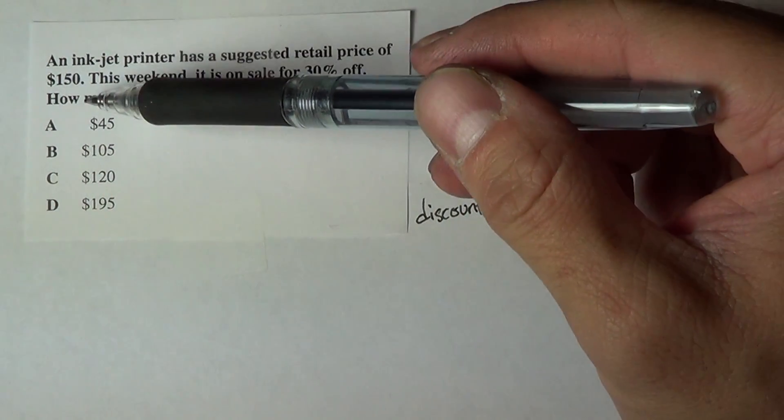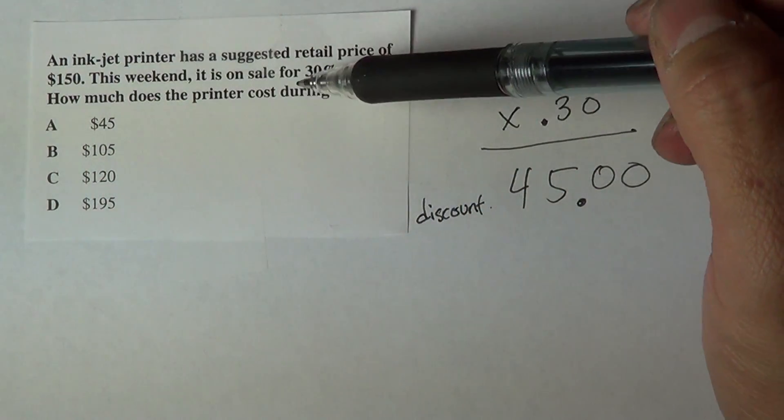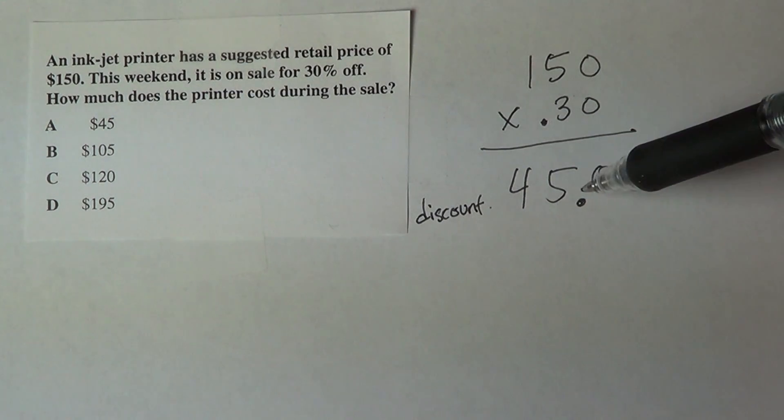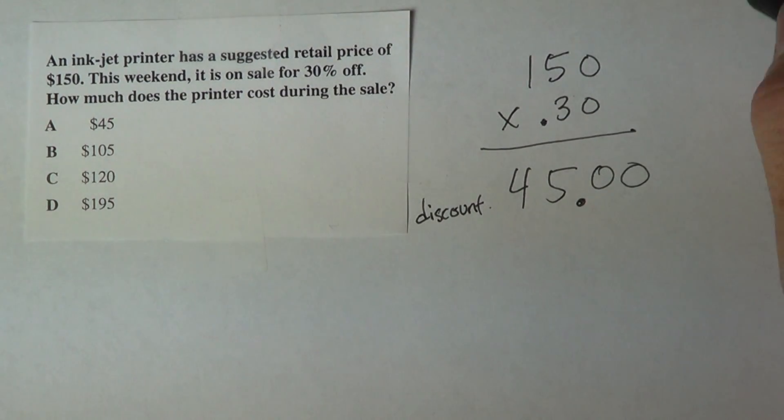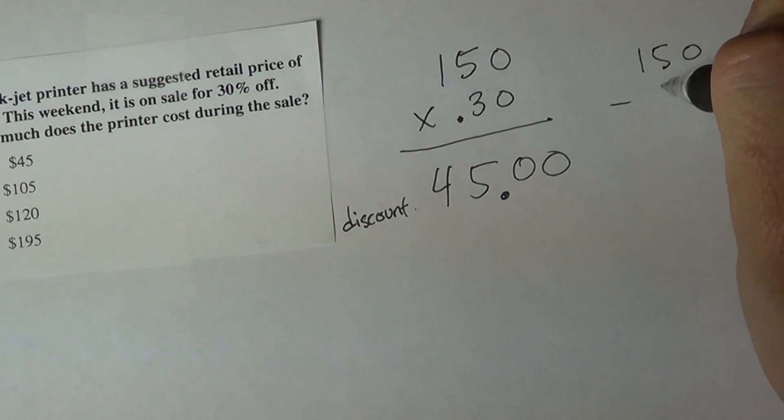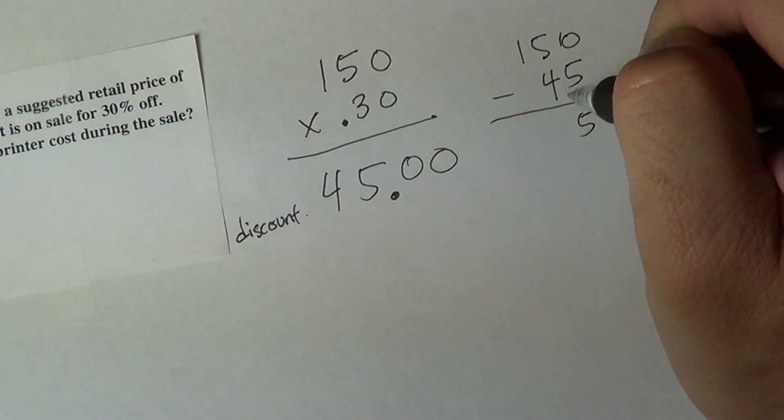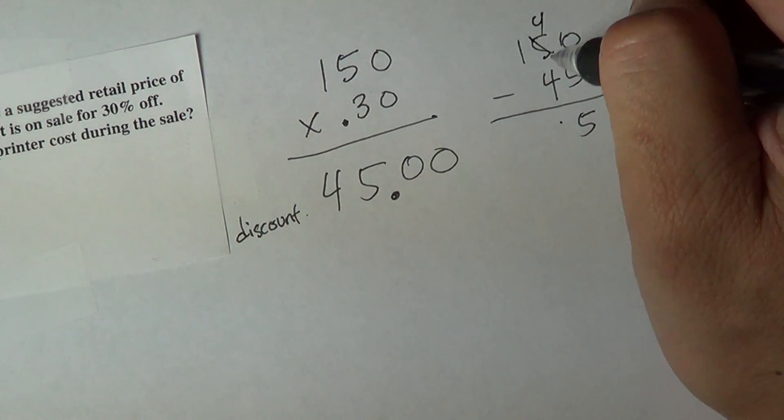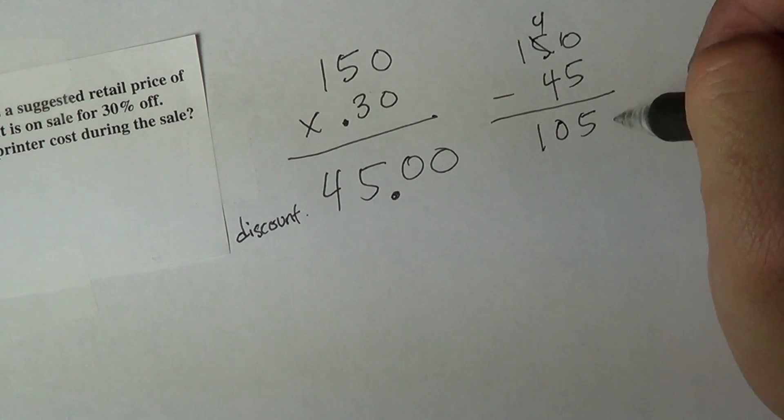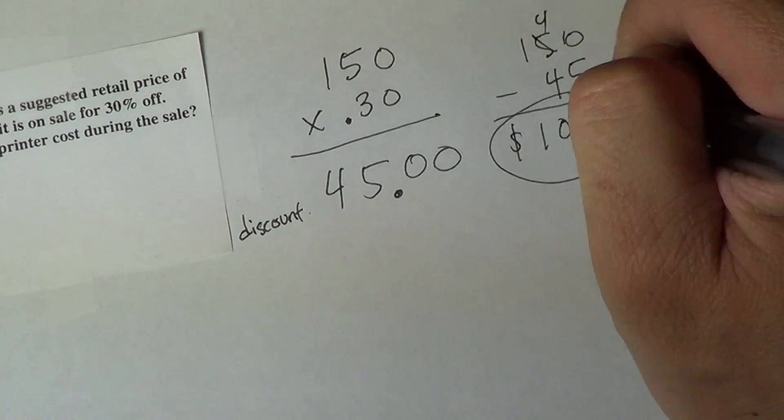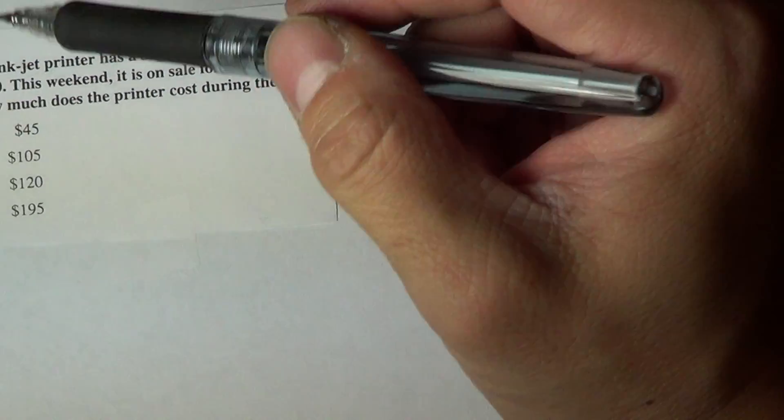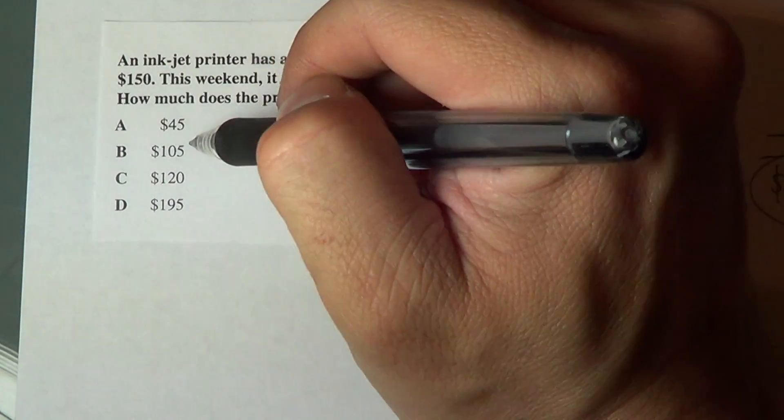So the sentence at the end says how much does a printer cost during the sale? Well the printer doesn't cost $45, it's $45 off $150. So $150 minus $45, the total cost will be $105, and if you look at the answer choice, $105 is B.